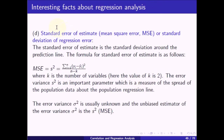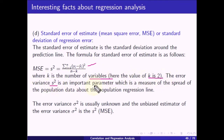The standard error of estimate, or mean square error, is the standard deviation around the prediction line. The formula is: MSE equals the summation of (yi minus yi-hat) squared divided by (n minus k), where k is the number of variables — here k equals 2. The error variance s-squared is an important parameter measuring the spread of the population data about the population regression line. The error variance sigma-squared is usually unknown, and s-squared is its unbiased estimate.